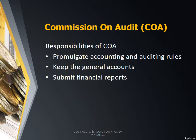The second responsibility of the Commission on Audit is to keep the general accounts of the government, including the supporting vouchers and other documents. In government, we follow what is called the voucher system, a system authorizing cash disbursement, meaning all transactions are supported by a voucher, which in turn is supported by original supporting documents — all of which are passed to the COA. What remains in the government agencies are only the photocopies or duplicate copies.